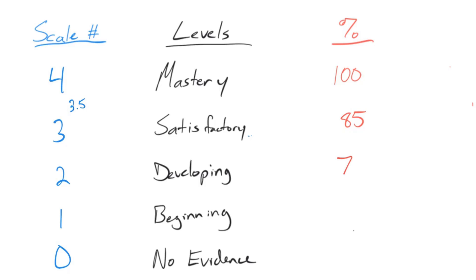Going to developing, I'll say that's a low C- right there between a C- and a D. Beginning, it's another 15 percentage points. That's 55. And if no evidence, it's all the way down to a zero.